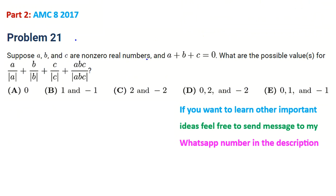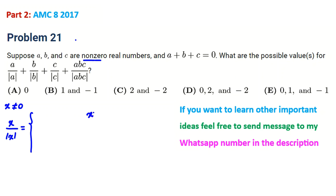Suppose a, b, c are non-zero real numbers and a plus b plus c equals 0. What are the possible values for the given expression? First, note that x over |x|: if x is positive, this equals 1; if x is negative, this equals −1. Since a, b, c are non-zero, only the sign matters.